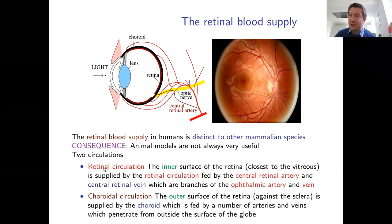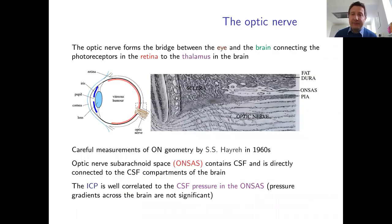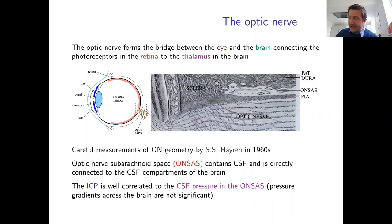Returning to the optic nerve, which is the key bridge between the eye and the brain: it is the collection of fibers leading from the photoreceptors to the brain.